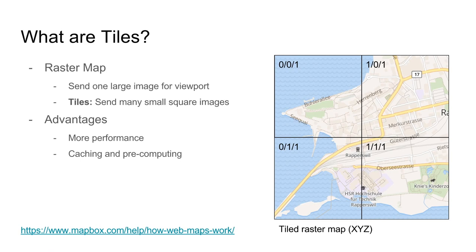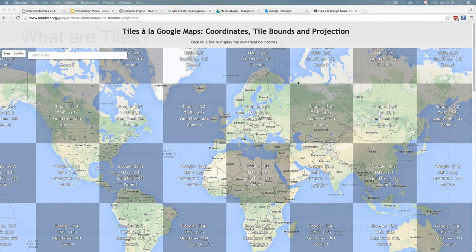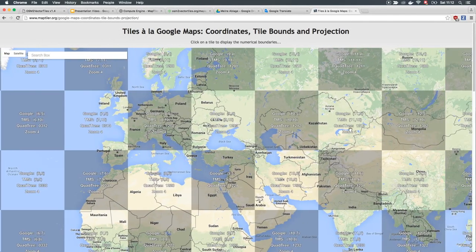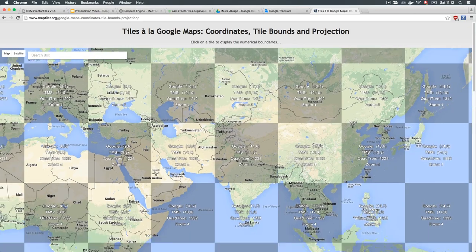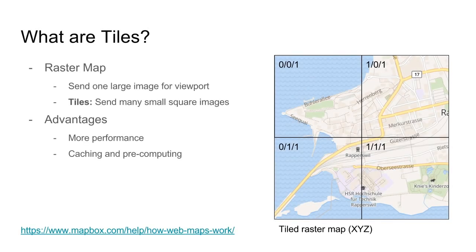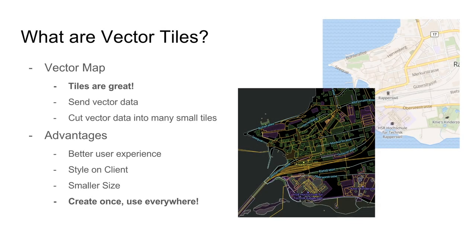First we need to explain what tiles and vector tiles are. The idea of tiles is to divide the map into many small square images that are joined on the client side. This allows a smoother user experience and has many advantages for serving the tiles fast. Since the same tiles always cover the same areas, they can be pre-computed and cached. Tiled raster maps are now replaced by vector tiles emerging as the new standard, but the same tile principles can be applied to vector data.